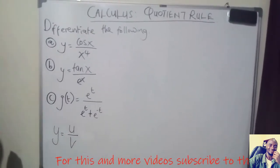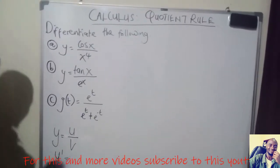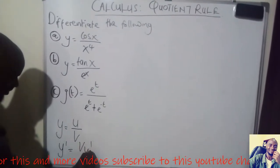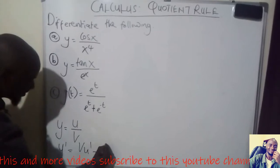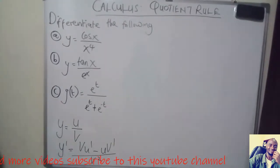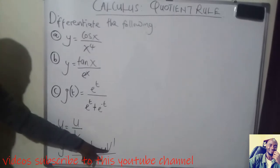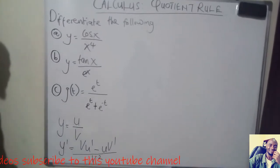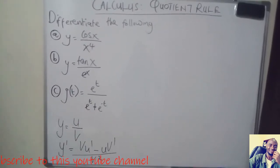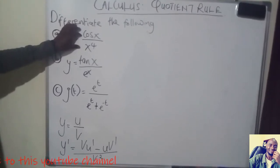Then we use what we call the quotient rule. Quotient rule states that the derivative of Y, or differentiation of Y, is equal to V·dU minus U·dV over V squared. So all that we need to do is to find U prime and V prime when we are applying this particular formula. We have these questions that we want to differentiate, and because they are presented as fractions, we are going to use the quotient rule.